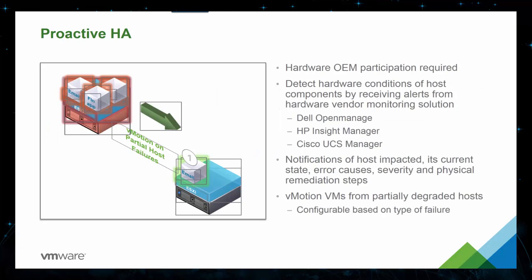With proactive HA, participating vendors such as Dell, HP, and Cisco have hardware monitoring solutions that detect hardware conditions for their servers. HA can now receive notifications of impacted hosts and partially vMotion VMs from degraded hosts to keep your cluster properly balanced. For example, if you're running Dell servers with Dell OpenManage and it detects that one or two RAM cards have gone bad, vSphere HA detects this as well and will partially vMotion VMs off that host to bring it to a good level and balance the load across all your hosts.